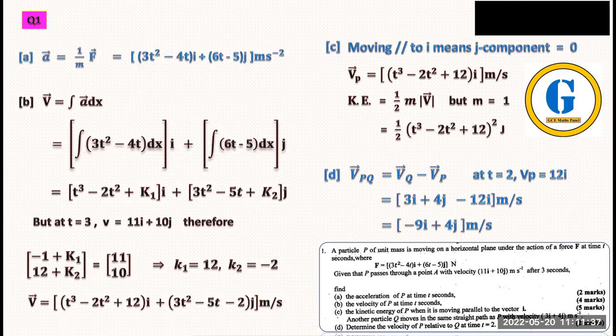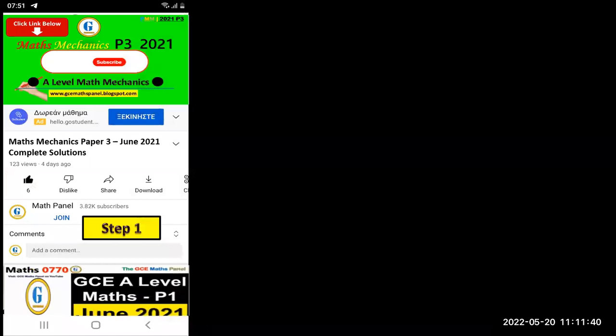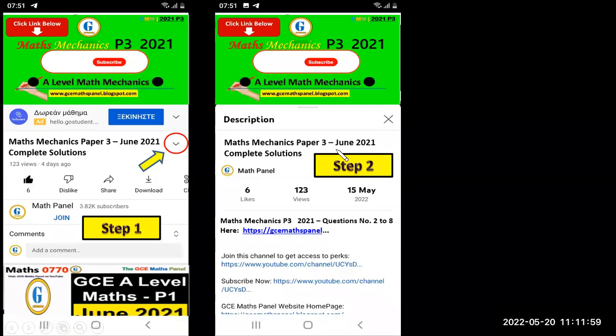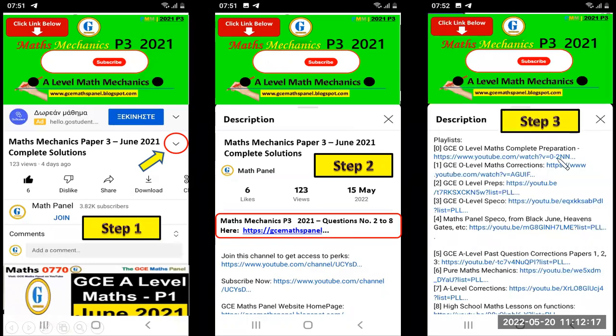On your phone, look below this video and you'll see an arrow pointing down. Click there and more information will appear. Move down to the highlighted link and click it - this will bring you to our webpage where you can see the remaining questions from question 2 to question 8. If you scroll down in step 3, you'll see many other videos with corrections.